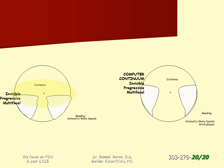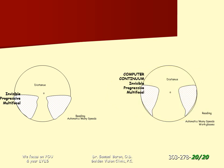The invisible progressive multifocal shown on the left is for general purpose use. The computer continuum on the right is a specialty lens used for extensive computing — three or more hours per day. Note the wider area for computing straight ahead.